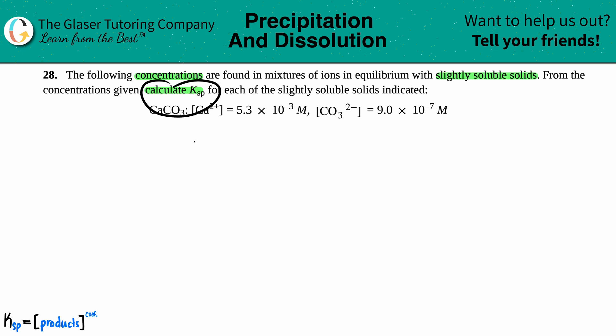Now if we want to calculate that Ksp value, it has to come from a balanced equation. Remember that these ionic compounds start as solids. Slightly soluble just means that a little bit of it breaks up into ions, but we have to write the balanced equation.